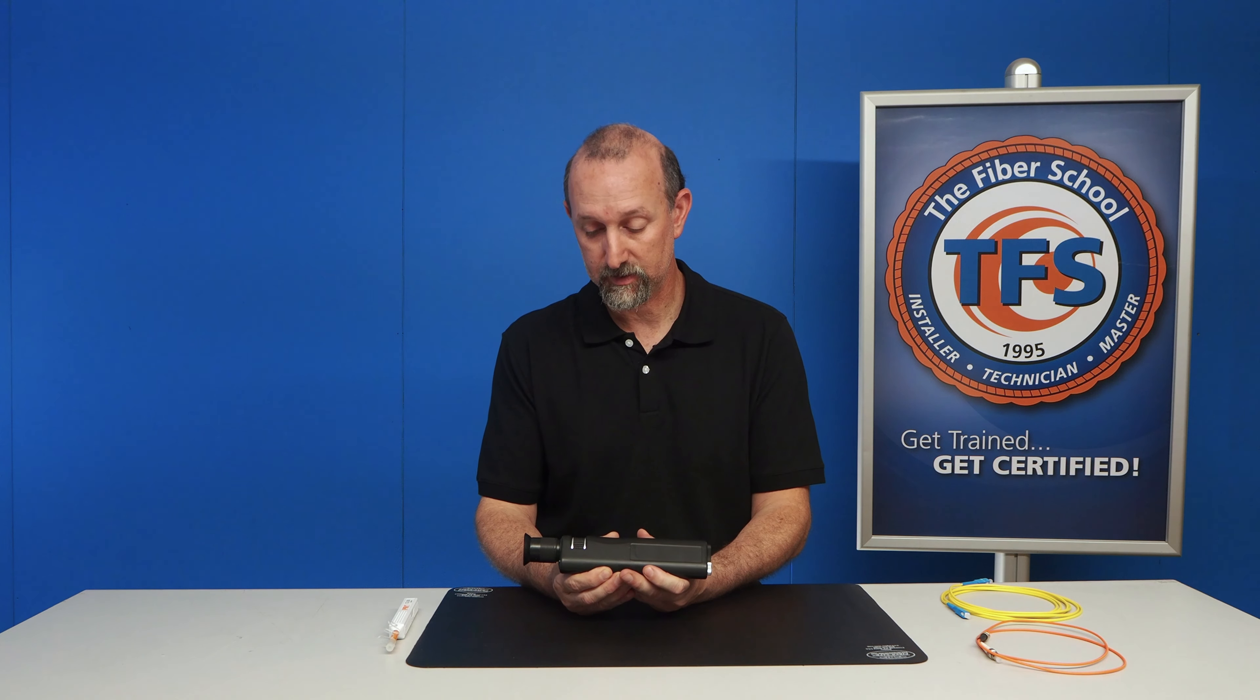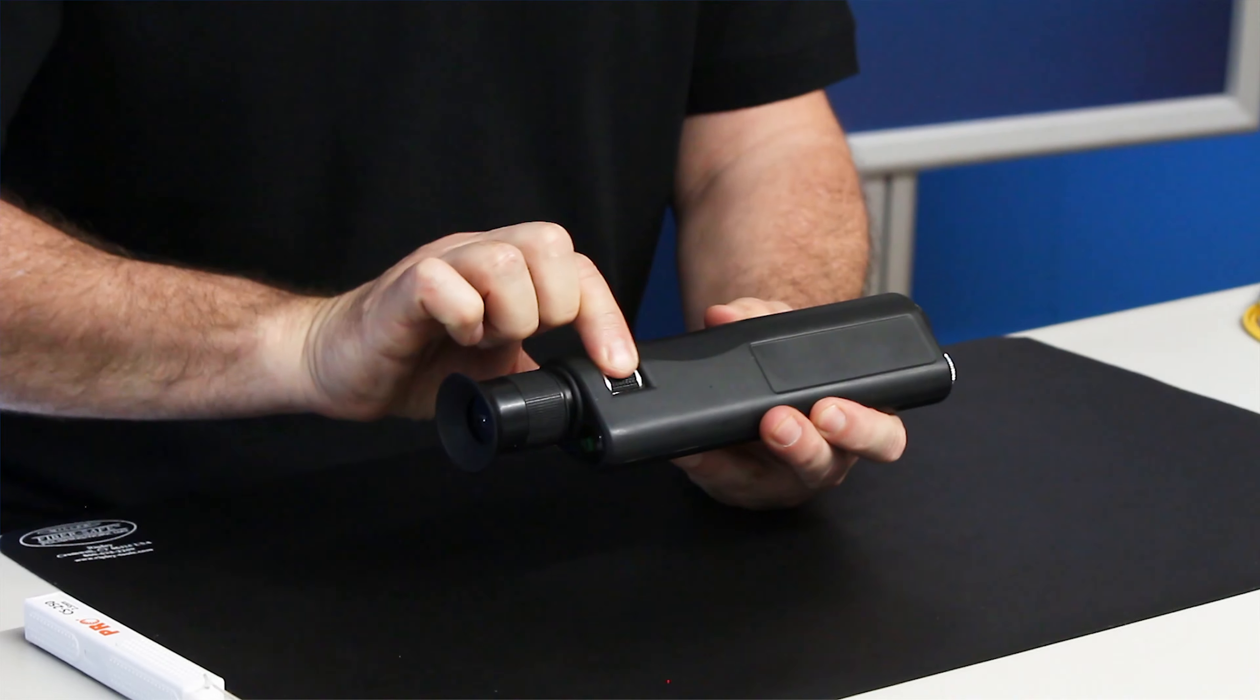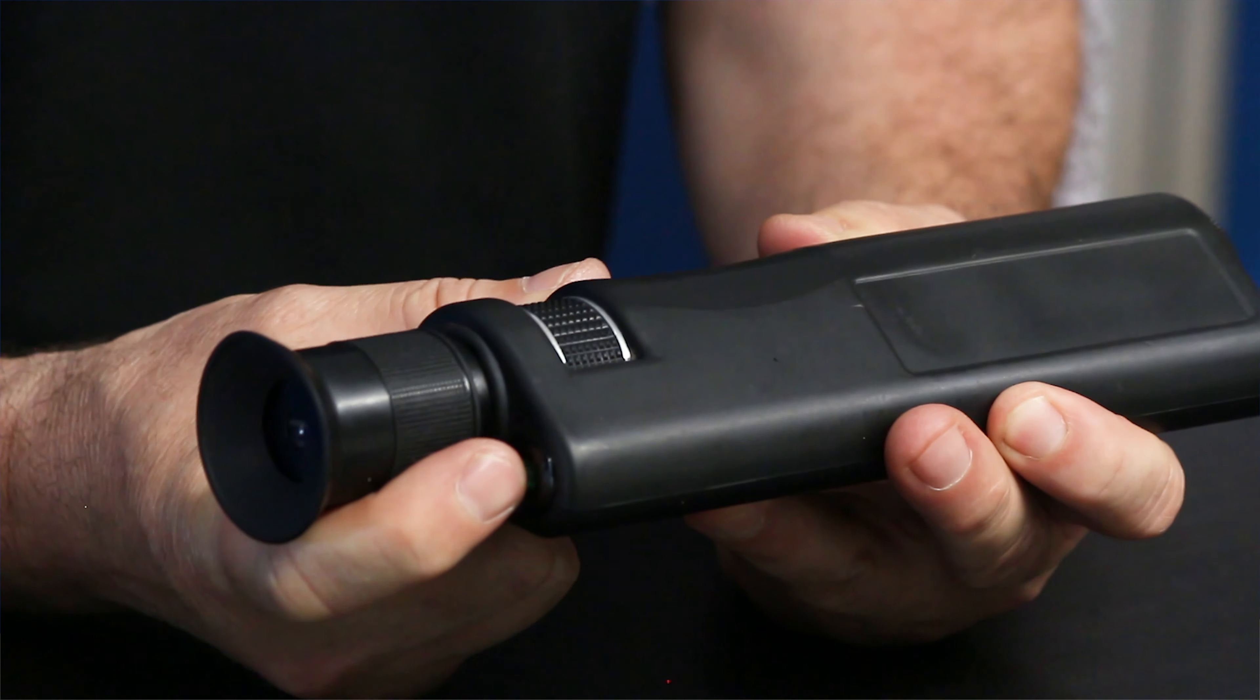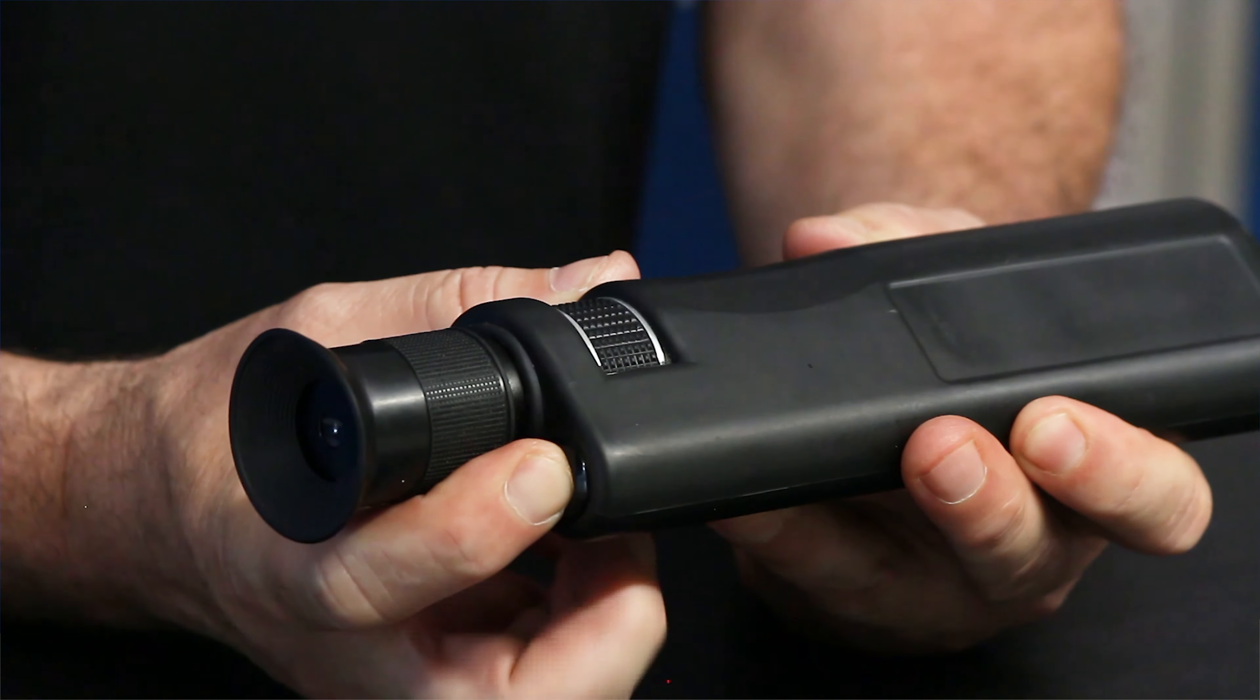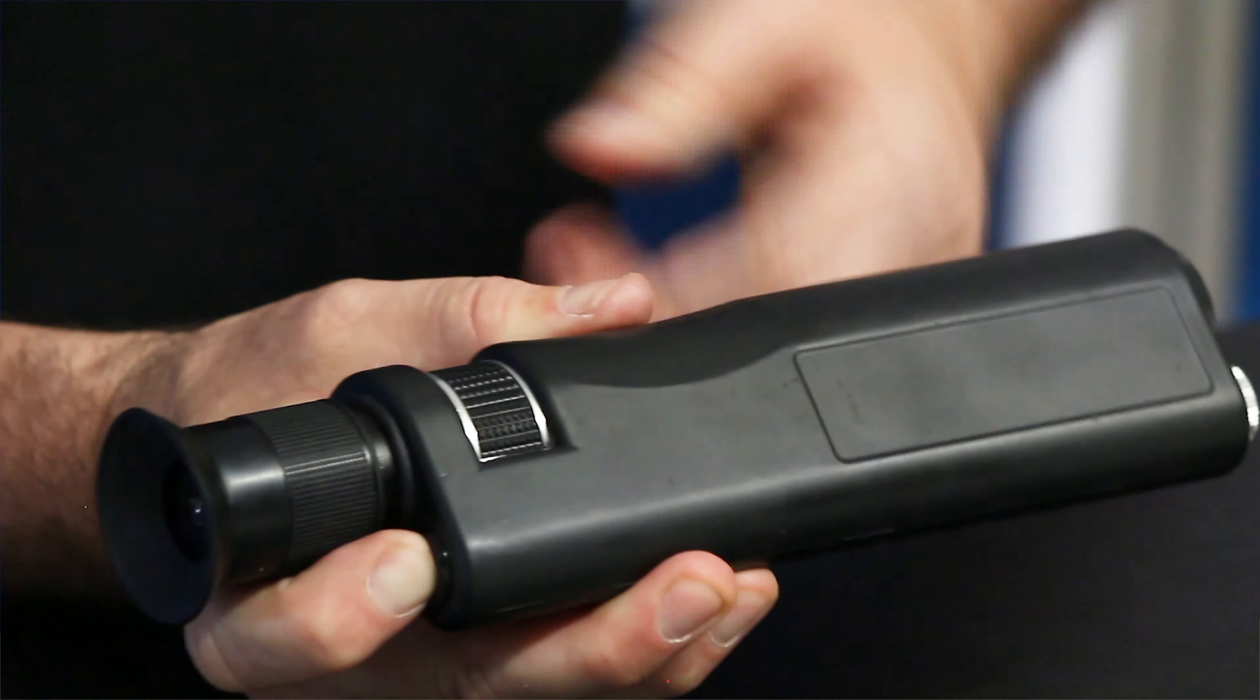It's a pretty simple piece of equipment. You have a focus. You have a power button here where you have to hold this in, and that will turn the light on internally inside this camera.